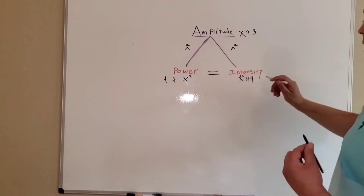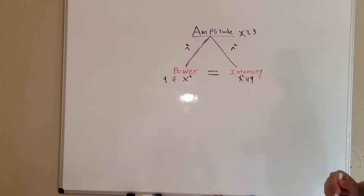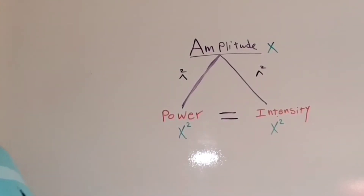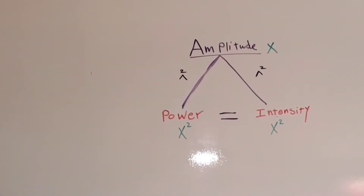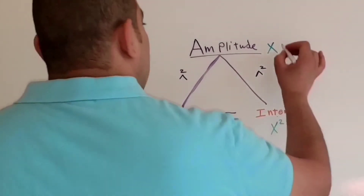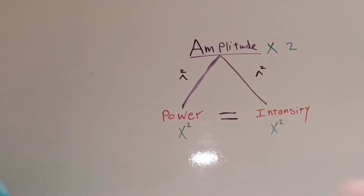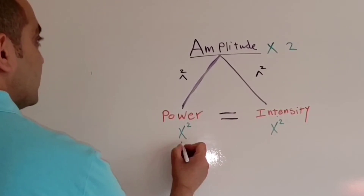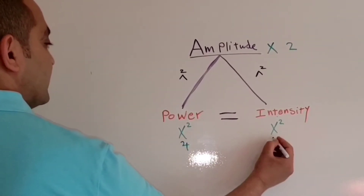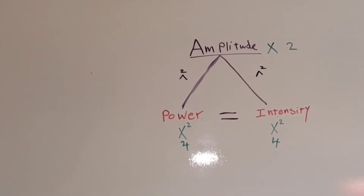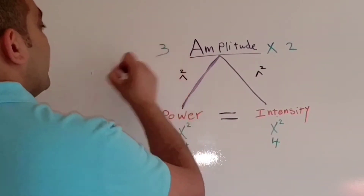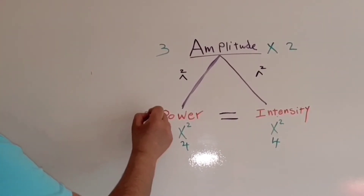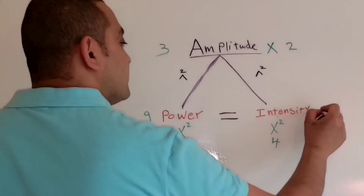Now we'll see what will happen if the value decreases instead of increases. If the amplitude decreases by a factor of X, the power and the intensity will decrease by a factor of X squared. That means if the amplitude decreases by a factor of 2, the power and the intensity will decrease by a factor of 4. If the amplitude decreases by a factor of 3, the power and intensity will decrease by a factor of 9.